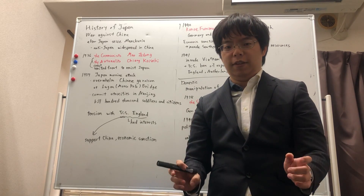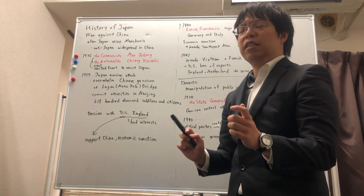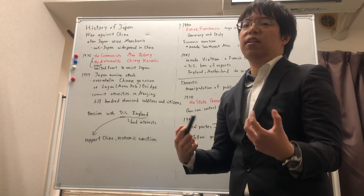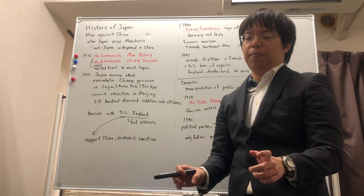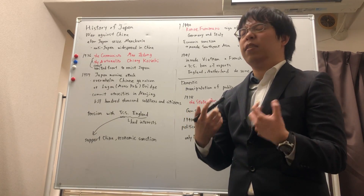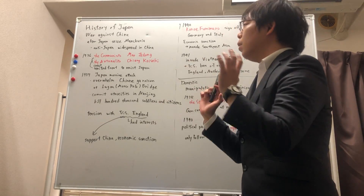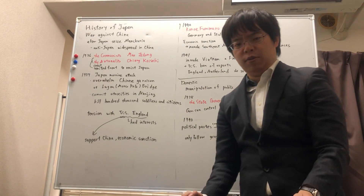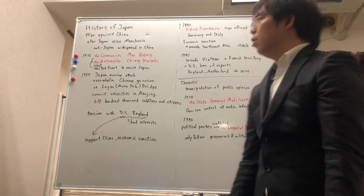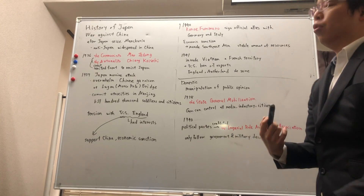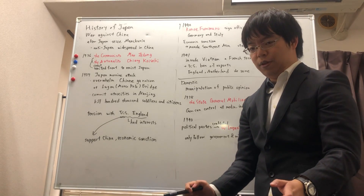After Japan seized Manchuria in China, the anti-Japan sentiment spread in China. The feelings were so strong that the leader of the Communists, Mao Zedong, and the top of the Nationalists, Chiang Kai-shek, created a united front to resist Japan.